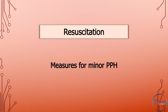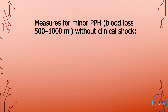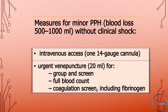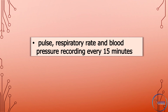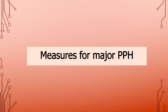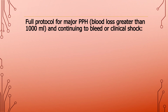Resuscitation: measures for minor postpartum hemorrhage, or blood loss of 500 to 1,000 milliliters without clinical shock. Intravenous access with a 14-gauge cannula; urgent venepuncture of 20 milliliters for group and screen, full blood count, and coagulation screen including fibrinogen; pulse, respiratory rate, and blood pressure recording every 15 minutes; and commence warmed crystalloid infusion.